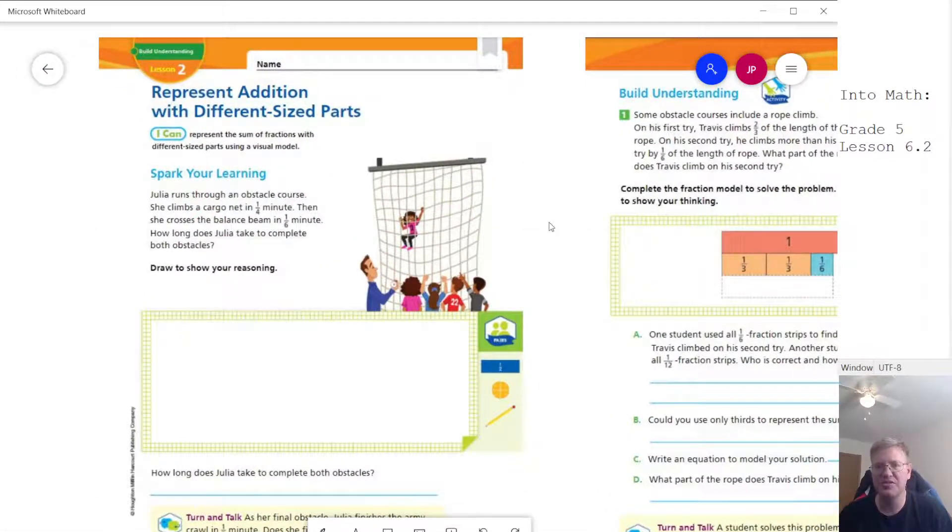We're going to be using fraction strips again to help us. So Julia ran through an obstacle course and climbed a cargo net in a quarter of a minute, crosses the balance beam in one-sixth of a minute, and we want to figure out the total amount of time as a fraction.